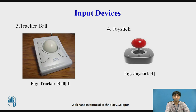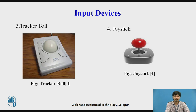The third input device is the tracker ball. The tracker ball is a ball located next to the keyboard, and you can change the orientation of the ball, which changes the position of the cursor on the screen. The fourth input device is the joystick — when you move the stick in either direction, resistors fixed at the bottom change resistance, and the position can be seen on the screen.